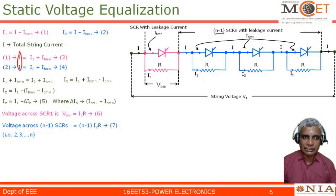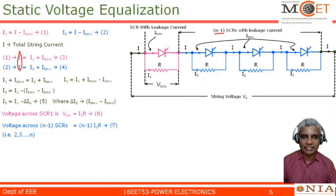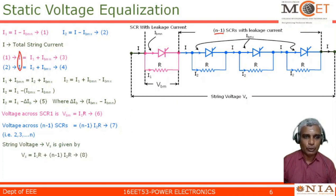The colors of the equations correspond to the colors of the SCRs used in the string, with green for common expressions. The total string voltage Vs equals the sum of equations 6 and 7: Vs equals I1·R plus (n minus 1)·I2·R. This is equation 8, the expression for the total string voltage.